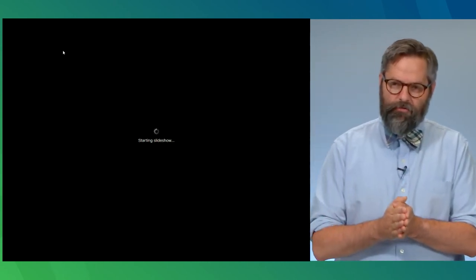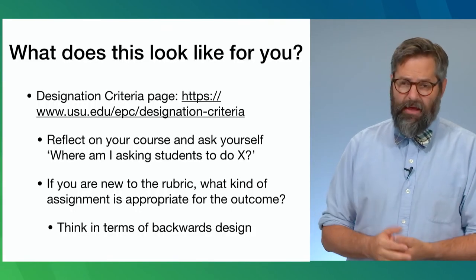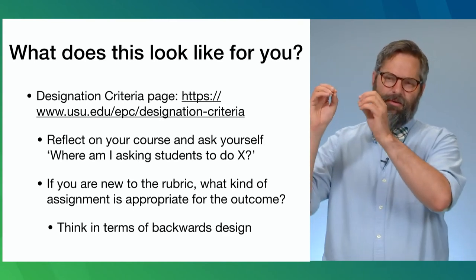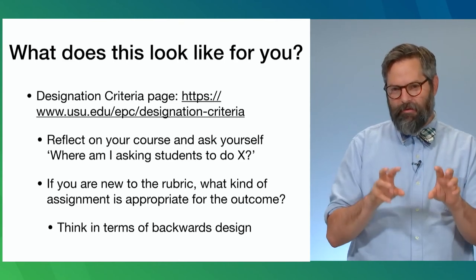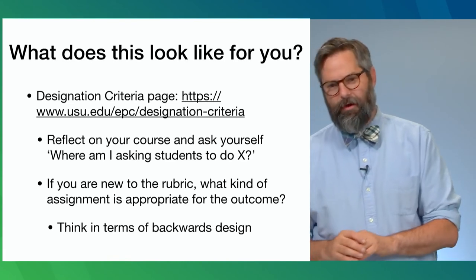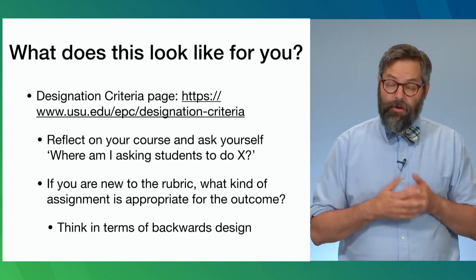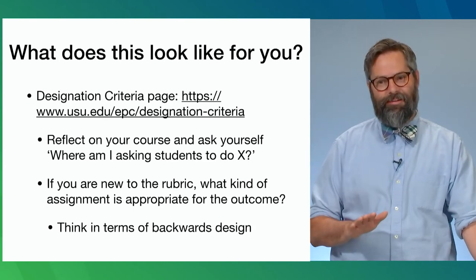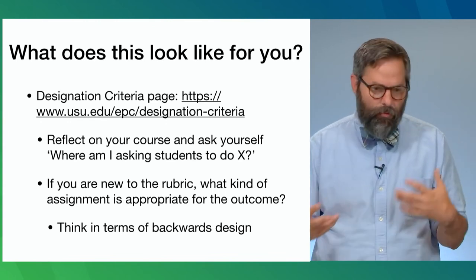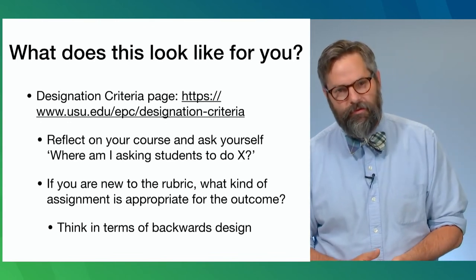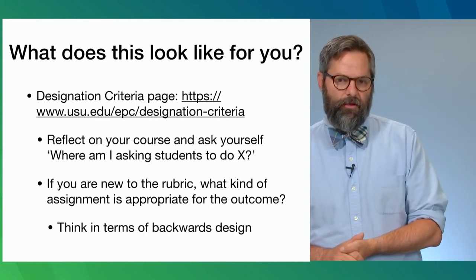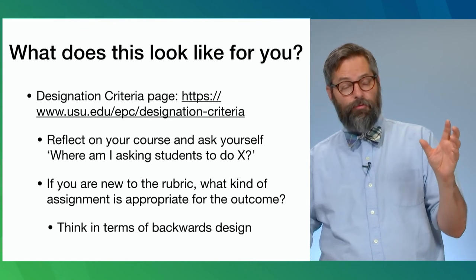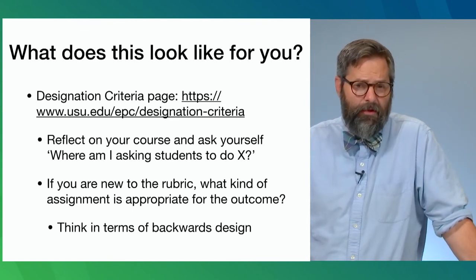If you're teaching a Gen Ed course you've taught for years, the thing to do is to reflect on your course looking at those outcomes and say: where am I asking students to improve on that learning outcome? Where am I doing in my class to help students demonstrate and develop proficiency on that outcome? That's a useful reflective practice for every single year. If you're new to the rubric or new to teaching a general education course, start with the rubric and think in terms of backwards design. What kind of assignments and class activities should I create to help my students develop proficiency on these outcomes? What will I ask them to do early on to measure where they are, and what will I do later in the semester to see how much movement they've made?